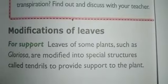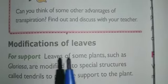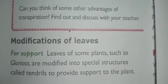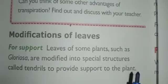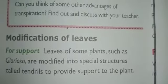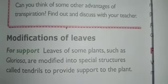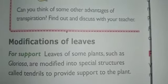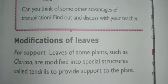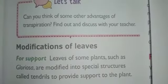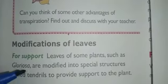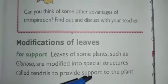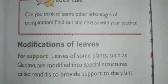Now let us see some modifications of leaves. First, for support: leaves of some plants such as Gloriosa superba are modified into special structures called tendrils. These tendrils attach to another plant for support. This is one modification of the leaf.